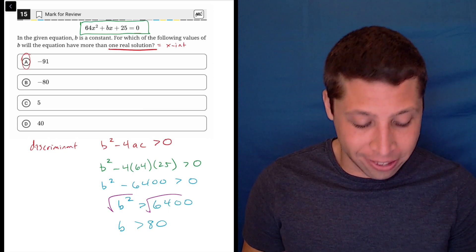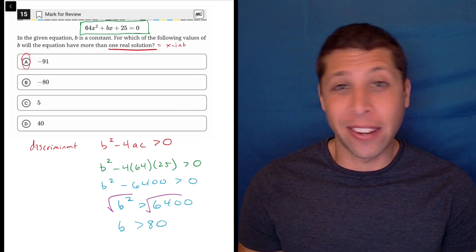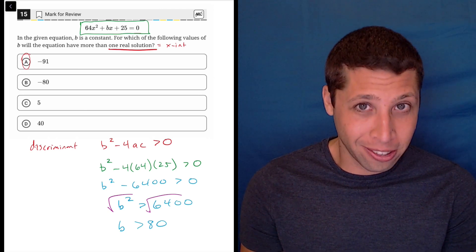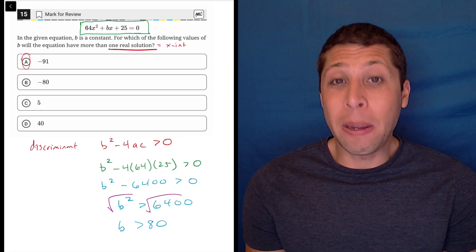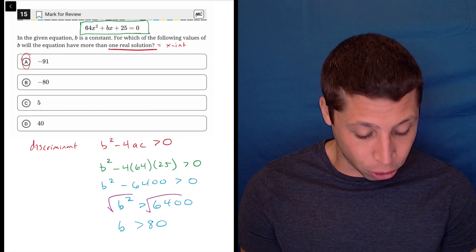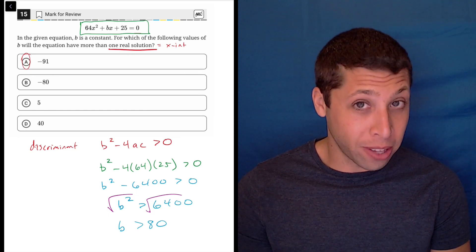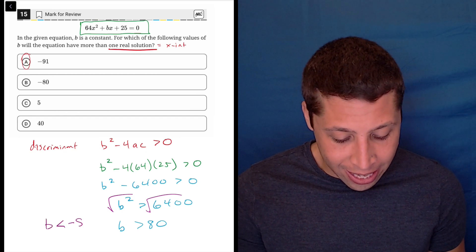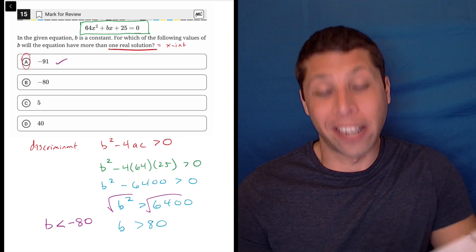The short of it is, in this particular case, because we're trying to solve for b, b could be positive or it could be negative. So when I take that square root, I need to create two separate inequalities. Either b is greater than 80, or b is less than negative 80. And now, negative 91 fits.